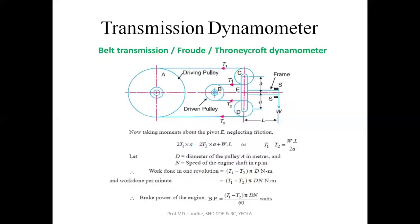Now next is transmission type of dynamometer. The first type is belt transmission dynamometer, also called Froude or Prony-Crop dynamometer. This dynamometer was developed by a scientist, and the name is given based on that scientist's name.